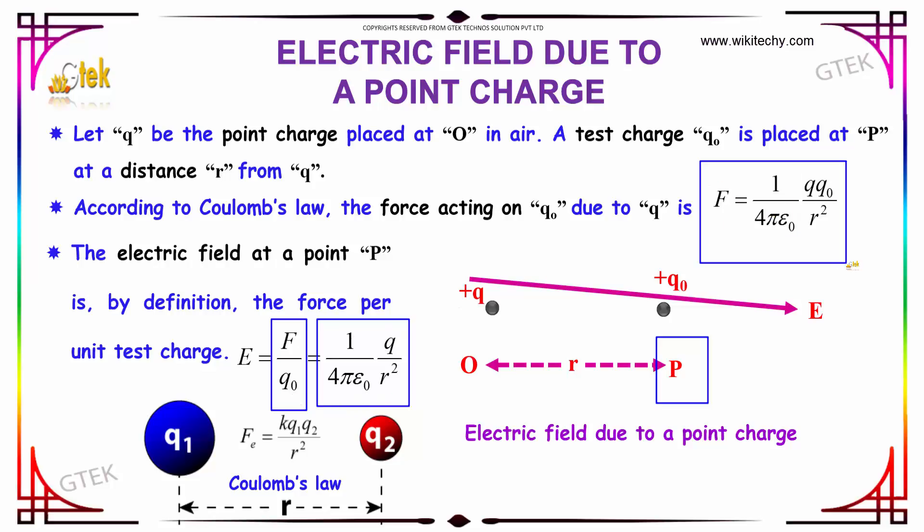If you see, this Q0 and Q0 will be getting cancelled. So we will be getting 1 divided by 4 pi epsilon 0, Q divided by R square.